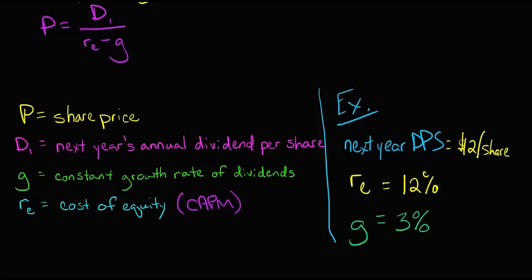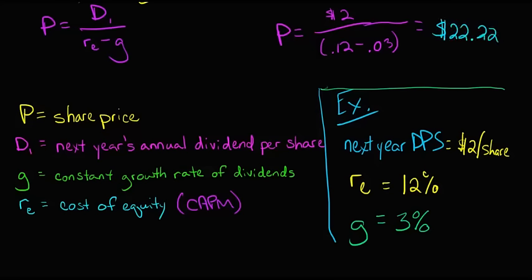Now the rest is pretty simple because we just use our equation and plug in these numbers. The price is going to be equal to $2 per share divided by, in the denominator, 0.12, that's the cost of equity, and then we subtract out that growth rate, which is 0.03. Ultimately, we're going to have 2 divided by 0.09, which gives us a share price of $22.22 a share.